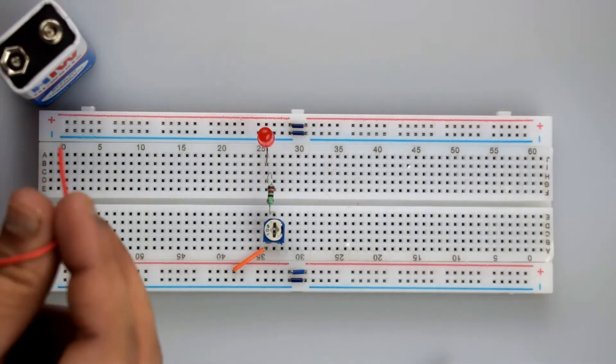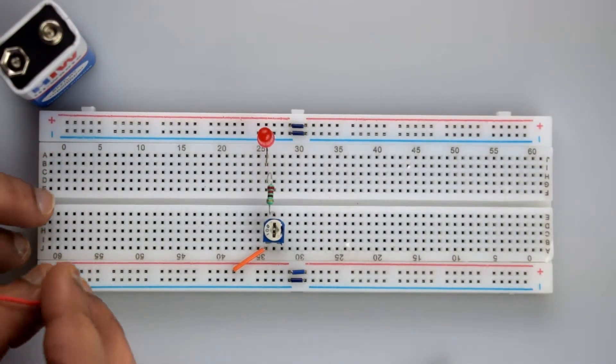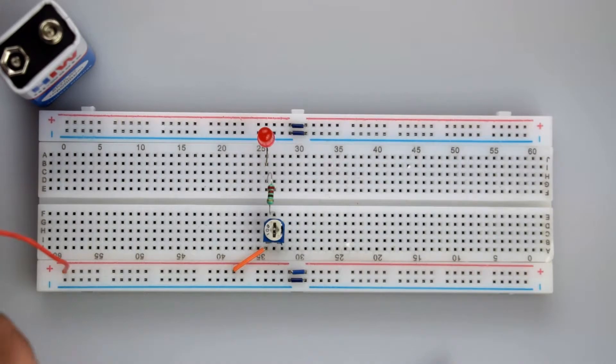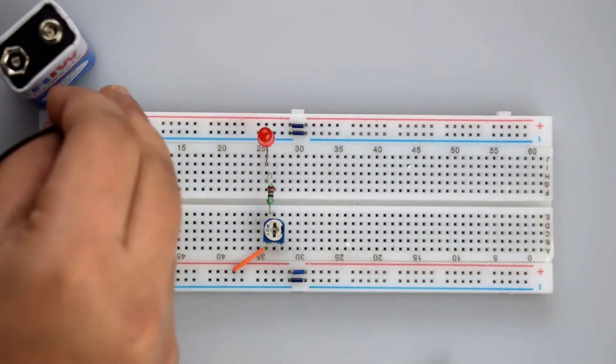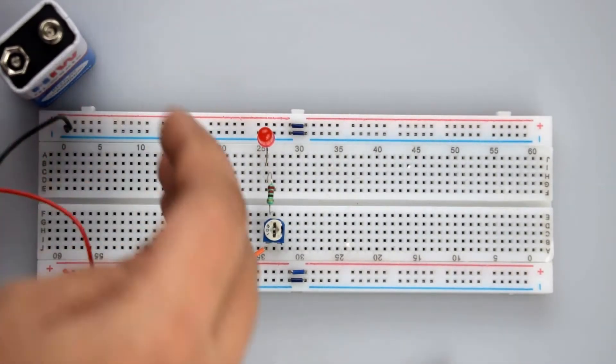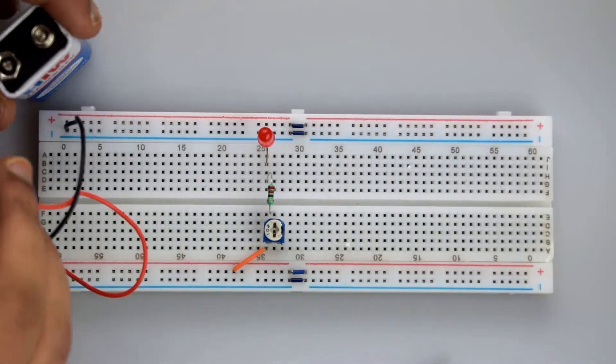The negative wire, that is the black wire, must be connected to the negative rail on the breadboard. Now attach the battery.